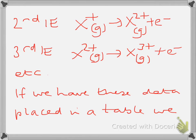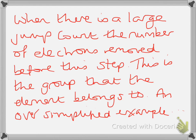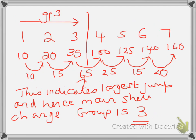If we've placed these data in a table we have successive ionization energy chart. You can work out which group the element belongs to. To do this you will need to work out the difference between the successive ionization energies. When there is a large jump count the number of electrons removed before this step. This is the group that the element belongs to.